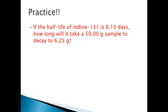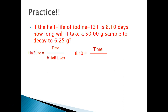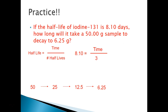If the half-life of iodine-131 is 8.10 days, how long will it take a 50-gram sample to decay to 6.25 grams? We're given the half-life and need to find the time duration. Counting half-life cycles from 50 g: → 25 g → 12.5 g → 6.25 g — that's 3 half-lives. Multiplying: 8.1 × 3 = 24.3 days.